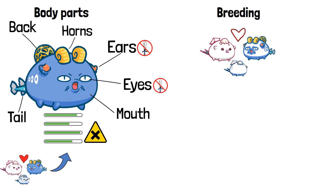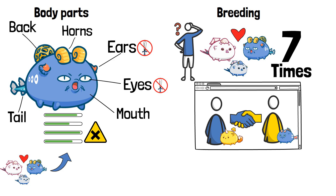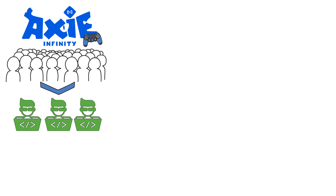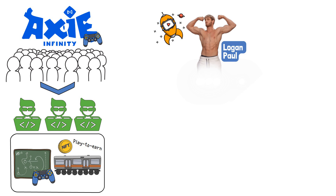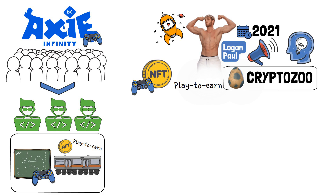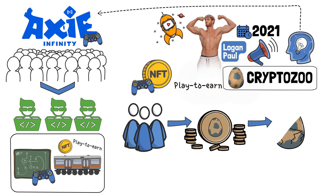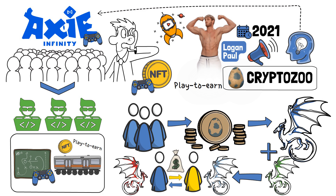In terms of creating new Axies, a digital pet can be bred up to 7 times. The game has a dedicated mating hub where players who want to breed their Axies can meet others driven by the same goal. Before breeding, users must pay attention to what degree — dominant, recessive, or minor — each body part carries, as these degrees give hints about what genes could be passed to the new Axie. The success of Axie Infinity influenced other developers to jump onto the NFT-based play-to-earn bandwagon — one example being YouTuber Logan Paul, who in 2021 introduced a game called CryptoZoo, where users acquired tokens to purchase eggs that hatched into animals, which could then be bred, creating hybrid animals to trade for profit.